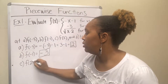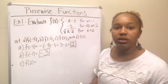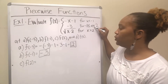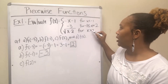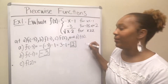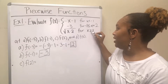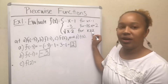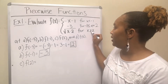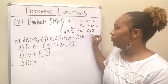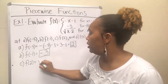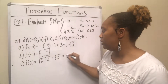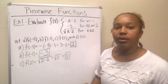For f(2), I need to figure out where 2 fits. The second piece has 2 in its boundary but says x is strictly less than 2. I actually forgot to put the 'greater than or equal to' sign on the third piece — if I hadn't, 2 wouldn't be in the domain at all. So 2 fits in the third piece, x greater than or equal to 2. Plugging in: 2 minus 2 is 0, and the square root of 0 is 0, so f(2) equals 0.